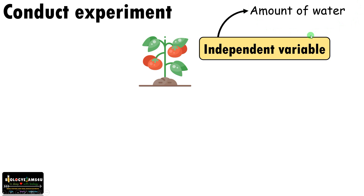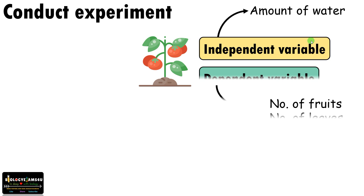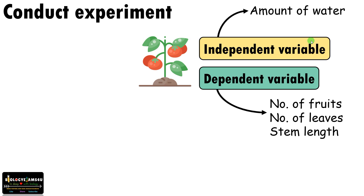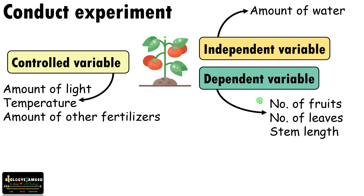Here we will be changing the amount of water to find out whether water has some effect on the growth of these plants. Then there is the dependent variable — a variable that is dependent on the change in the independent variable. If we change the amount of water, many factors will change as a result, like number of fruits, number of leaves, stem length, and root length. The variables affected by the change in the independent variable are called the dependent variable.